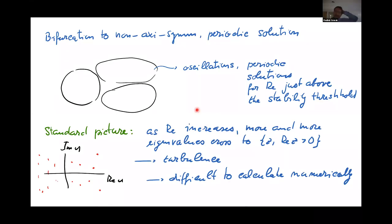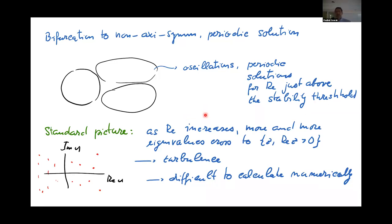The wake starts oscillating and further eigenvalues cross, producing more oscillations. There is the standard picture that as you increase the Reynolds number, more and more eigenvalues cross, leading to more oscillations resulting in turbulence. In the 1970s people realized you can have not only periodic and quasi-periodic solutions but also strange attractors — there is a whole theory around that.